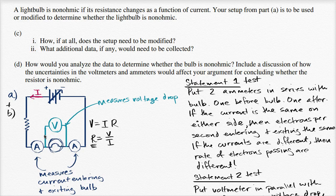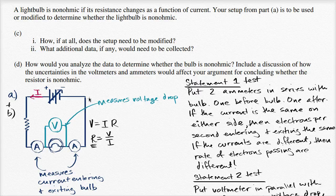We need to change the current and see how the resistance changes. There are a couple of ways we could change the current — we could change some other resistance, but we have a variable power source. So we can change the voltage across the entire circuit, and by changing that voltage, we change the current going through this simple series circuit. Then we can just measure V and I and figure out whether R changes as well.